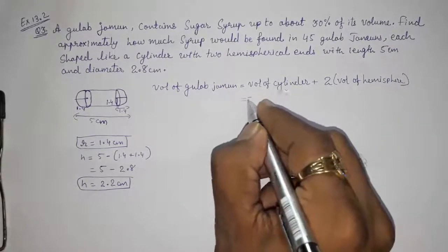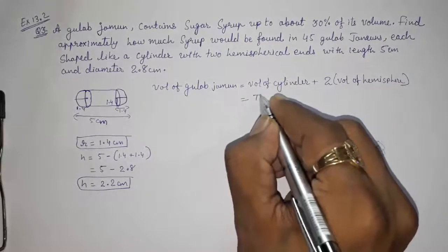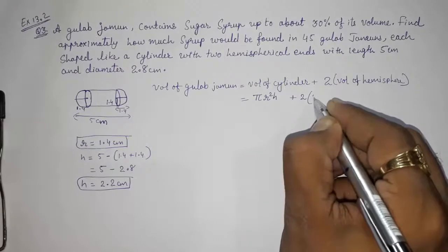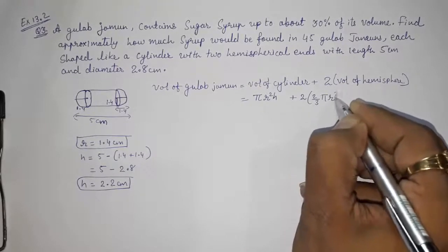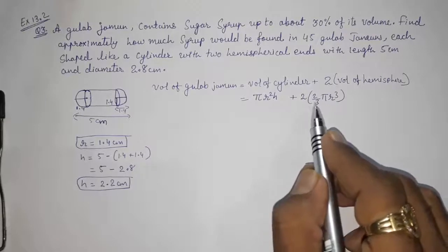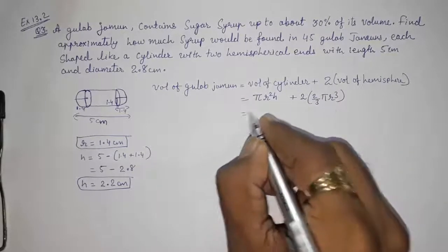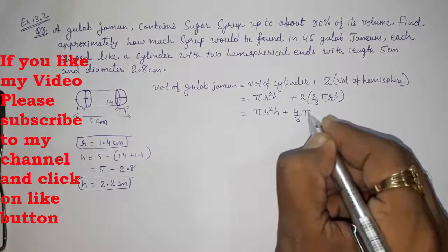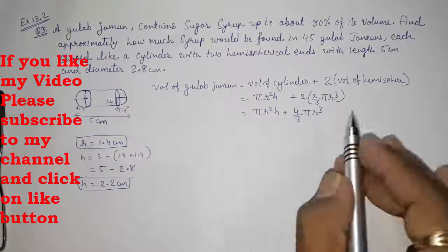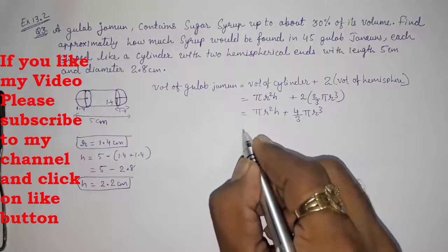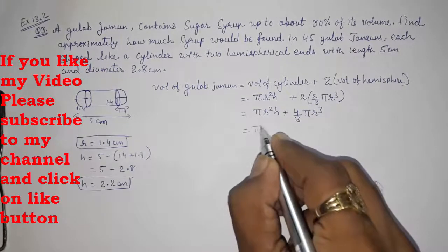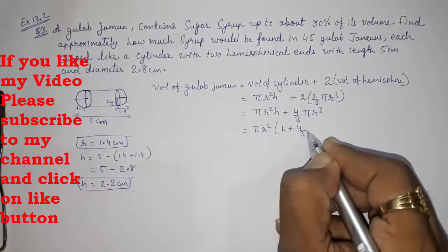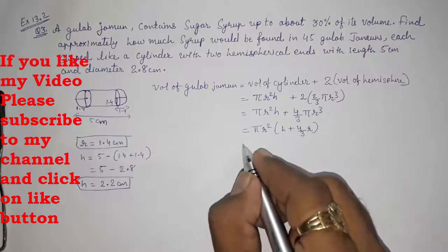Volume of cylinder that is πr²h plus 2 into 2/3 πr³. Volume of hemisphere is 2/3 πr³. This sum is very lengthy, that's why I am doing it nearby. We can take out π and r² common, so h plus 4/3 into r. This will be our remaining part.